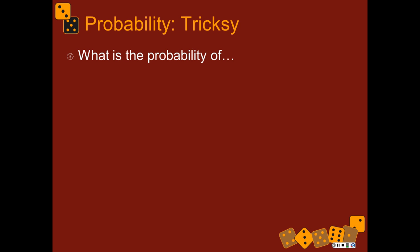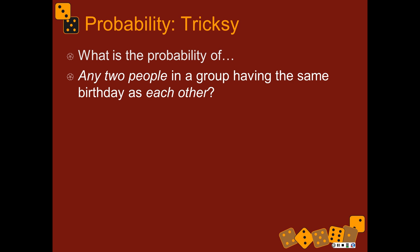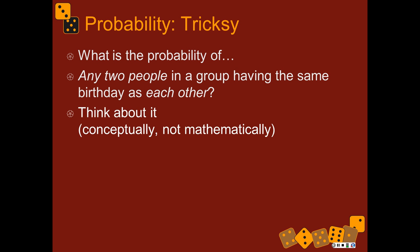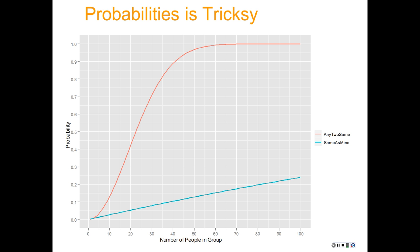Now this is where it gets weird. If you change the frame of the question, you've suddenly changed a lot. What's the probability of any two people in a group having the same birthday as each other? That's a very different question. In some ways this is no longer disjoint — we're looking at two people having the same birthday. One person can't have two birthdays, but two people can have the same birthday. So conceptually it tricks a lot of people.